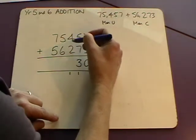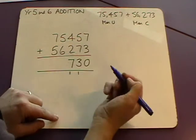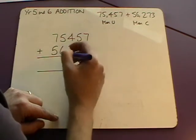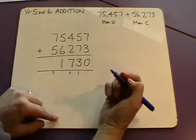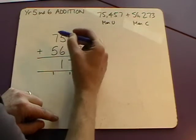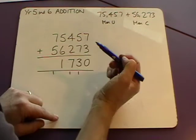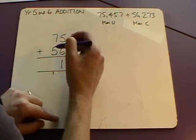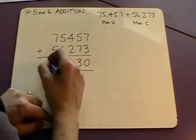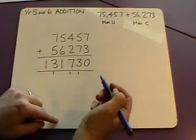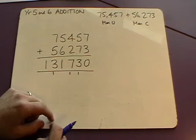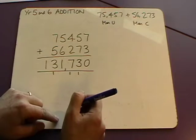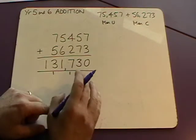Then we've got 4 and 2 and 1 which is 700, and then we've got 5 and 6,000 so that's 11,000. We can put 1,000 there and carry our 10,000 over there. Then we've got 70,000 and 50,000 which is 120,000, 130,000. So we can write that in 130,000 like that and our answer is 131,730 fans at the two matches altogether.